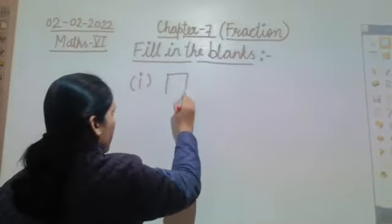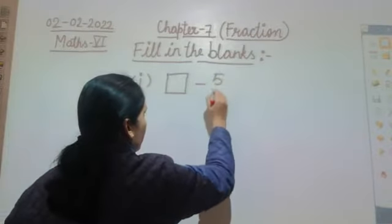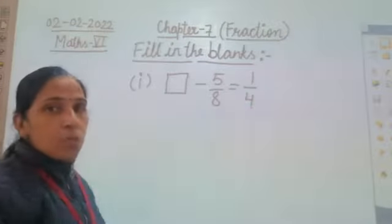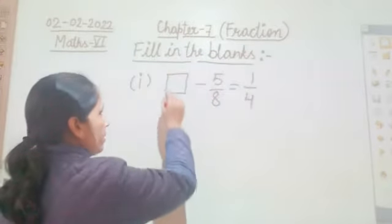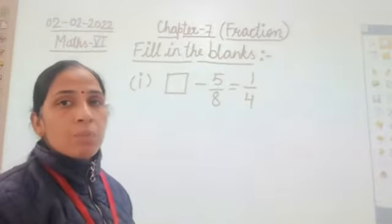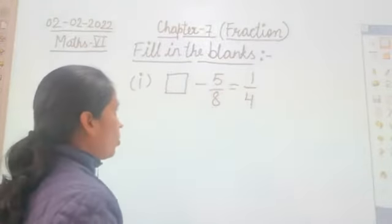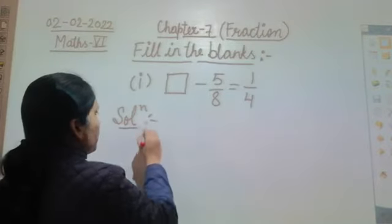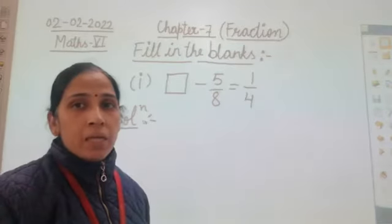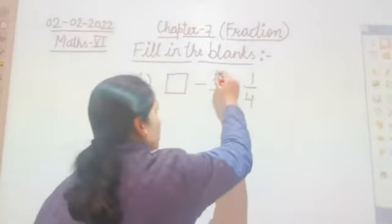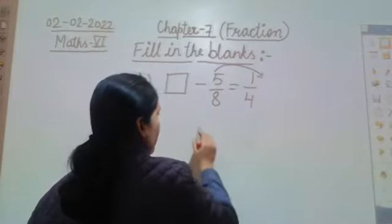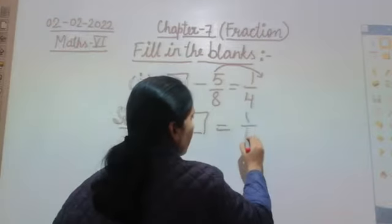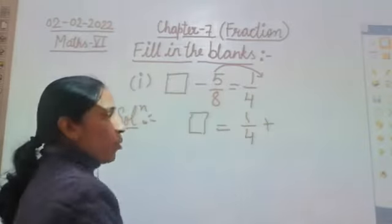Question 1: Fill in the blank. The blank minus 5/8 equals 1/4. You need to find which number goes in the blank. To solve this, rearrange the equation — move 5/8 to the right side. The blank equals 1/4 plus 5/8, where the negative becomes positive.